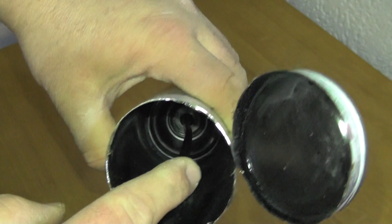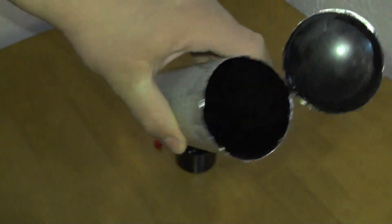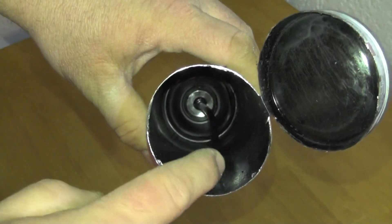There's a little plastic pickup tube that goes from the spray valve down to the bottom of the can to pick up the paint.